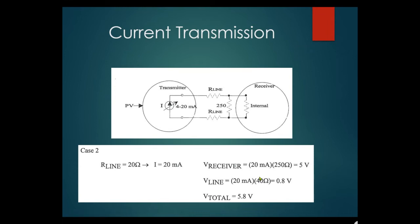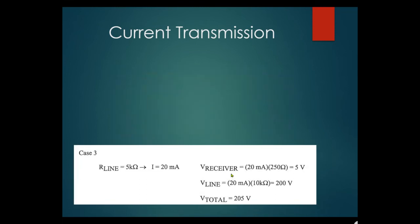In the lab, you'll have 24 volts and keep adding 250 ohm resistors to see the loop fail when there isn't enough voltage. Case three: line resistance is 5 kΩ. Voltage across receiver is still 5 volts, but line voltage is 20mA × 10kΩ = 200 volts. Total needed is 205 volts — that gets very high, especially on a 24 volt system.